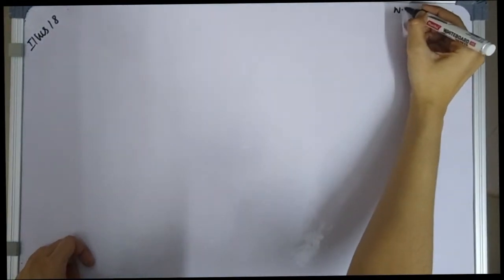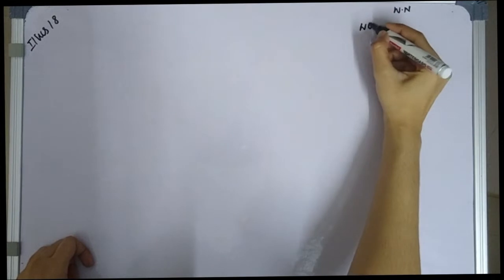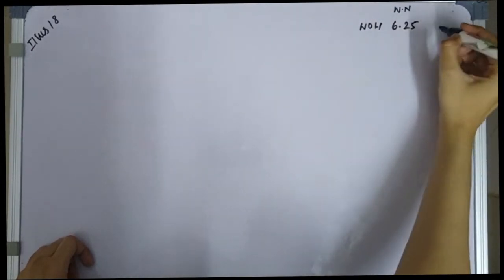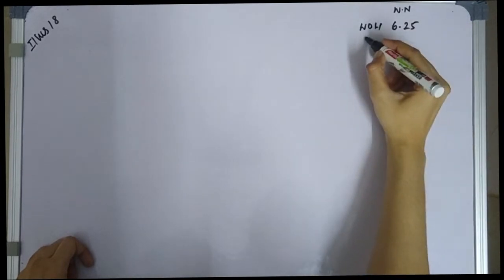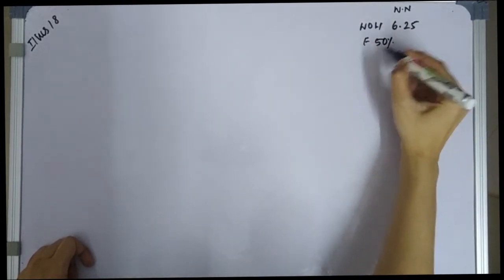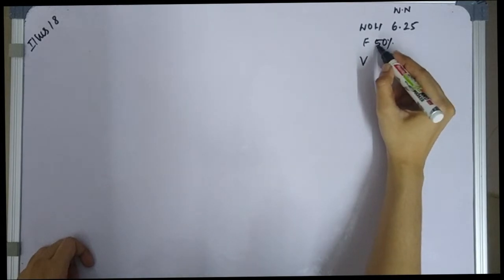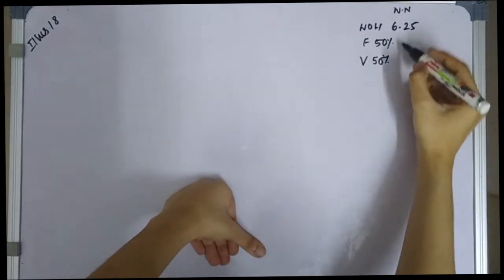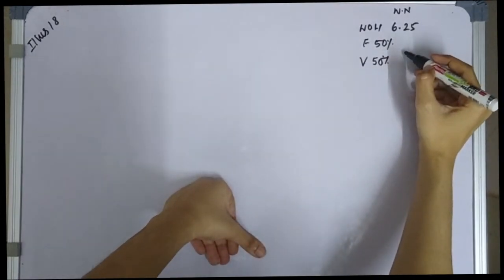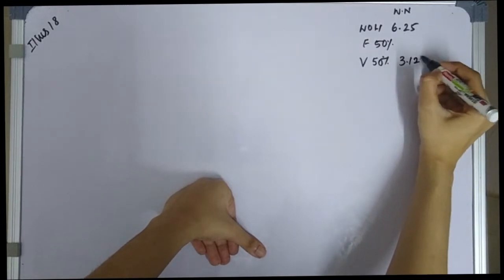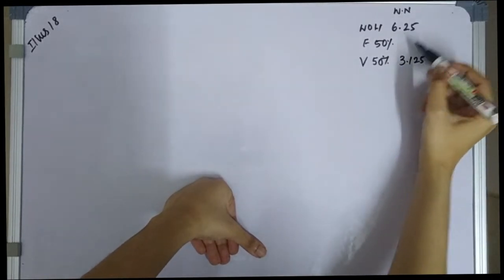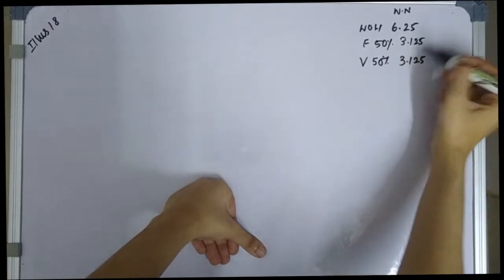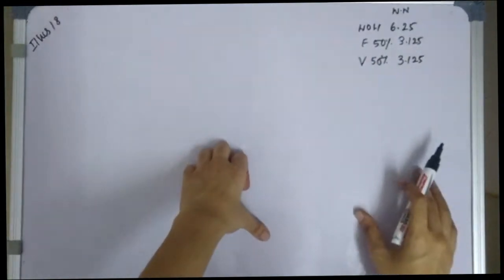Working note: Works overhead is 6.25 total. 50% is fixed, which gives a fixed portion of 3.125, and the variable portion is also 3.125. The total works overhead is confirmed at 6.25, split equally between fixed and variable.